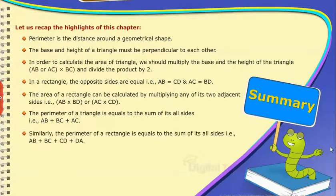Similarly, the perimeter of a rectangle is equal to the sum of its all sides, that is, AB plus BC plus CD plus DA.